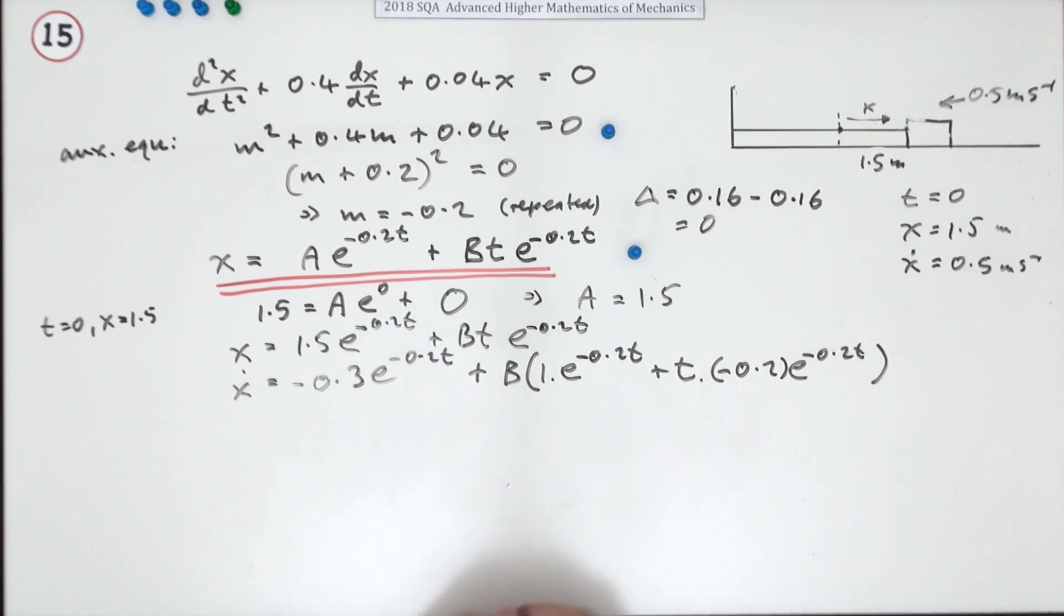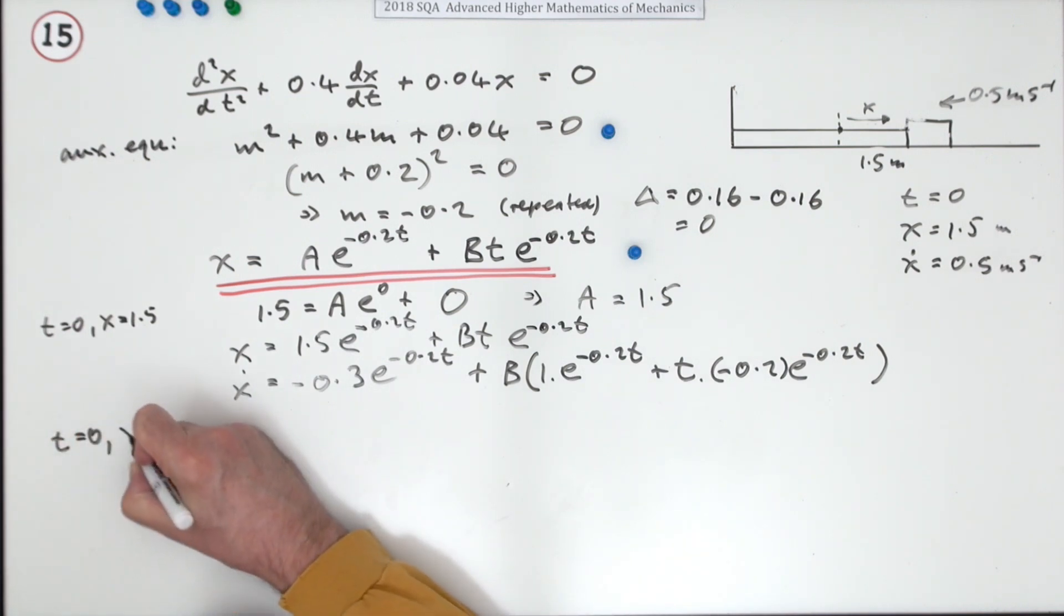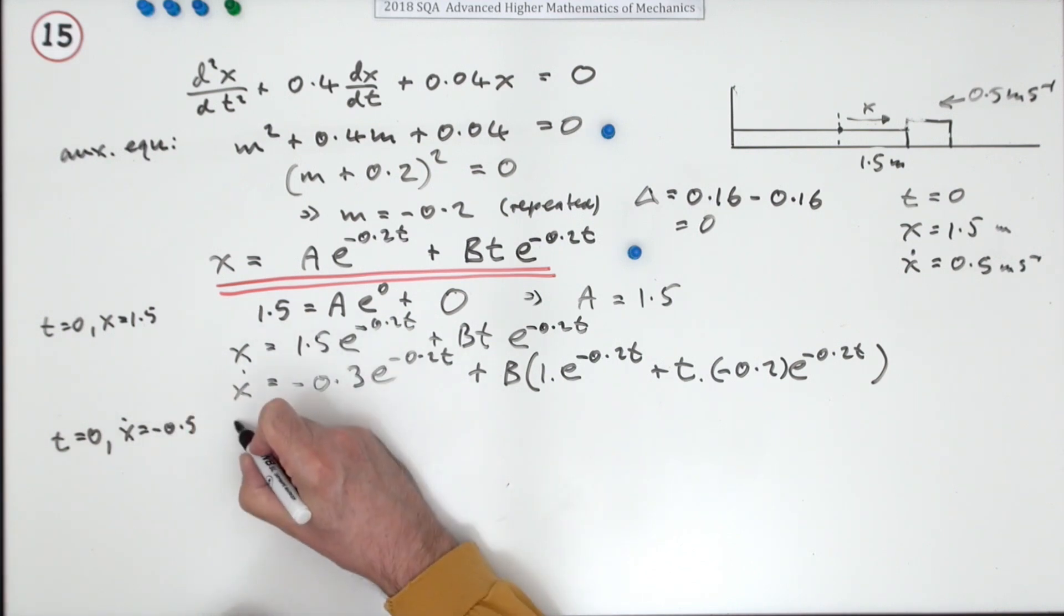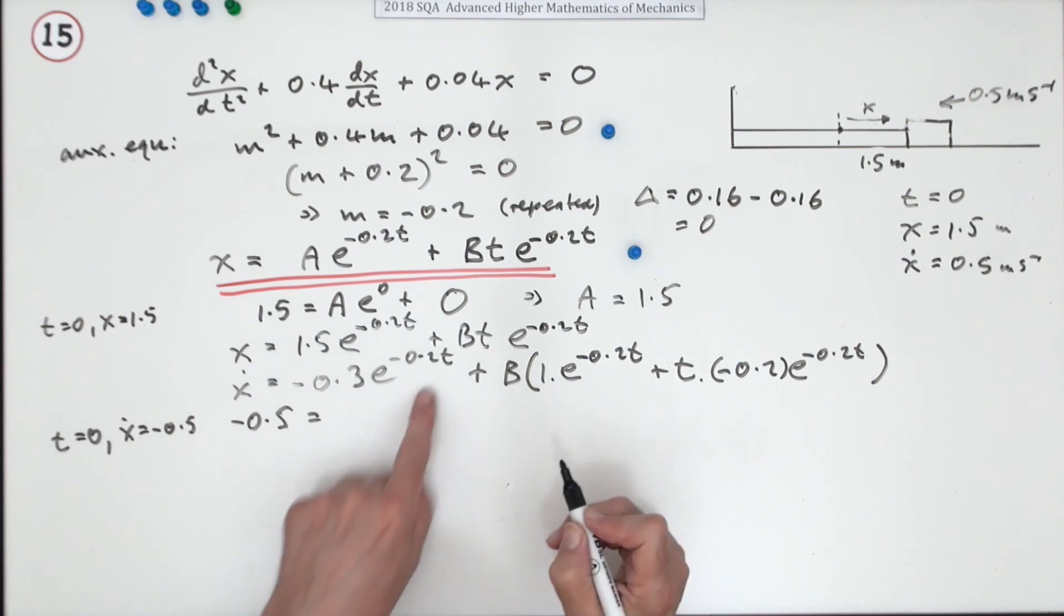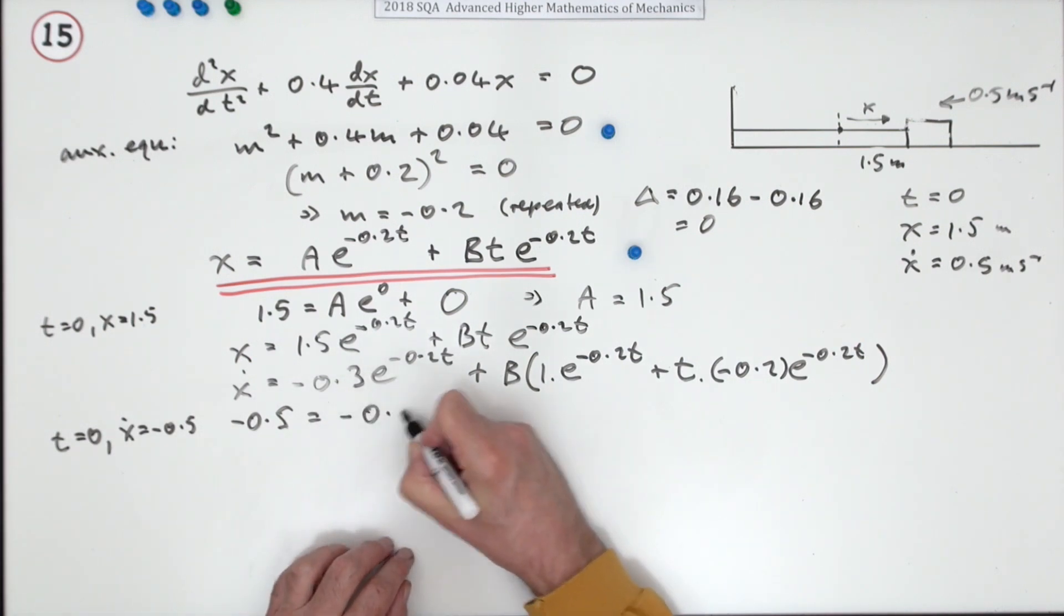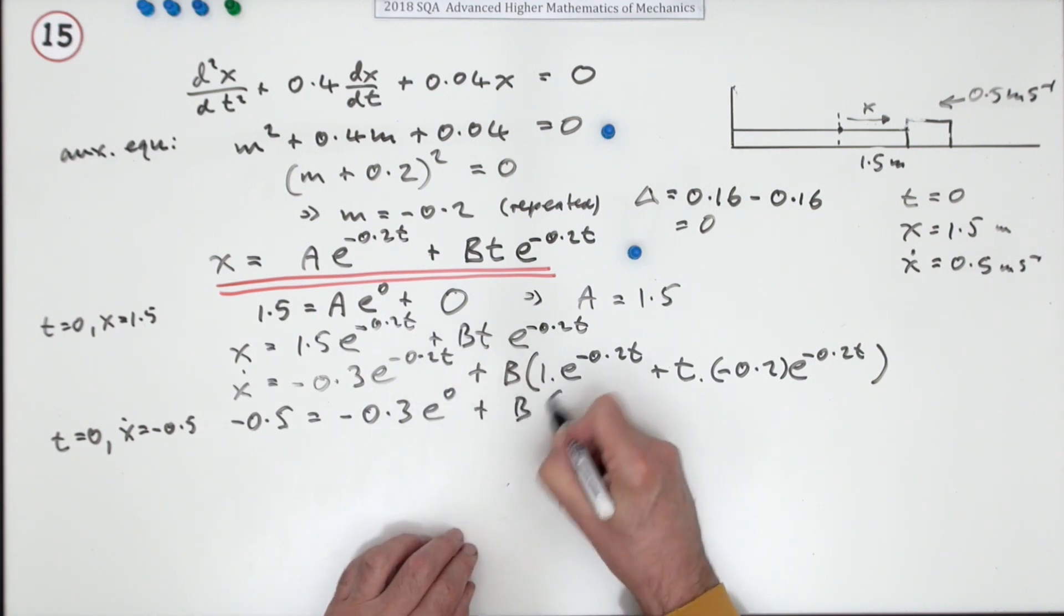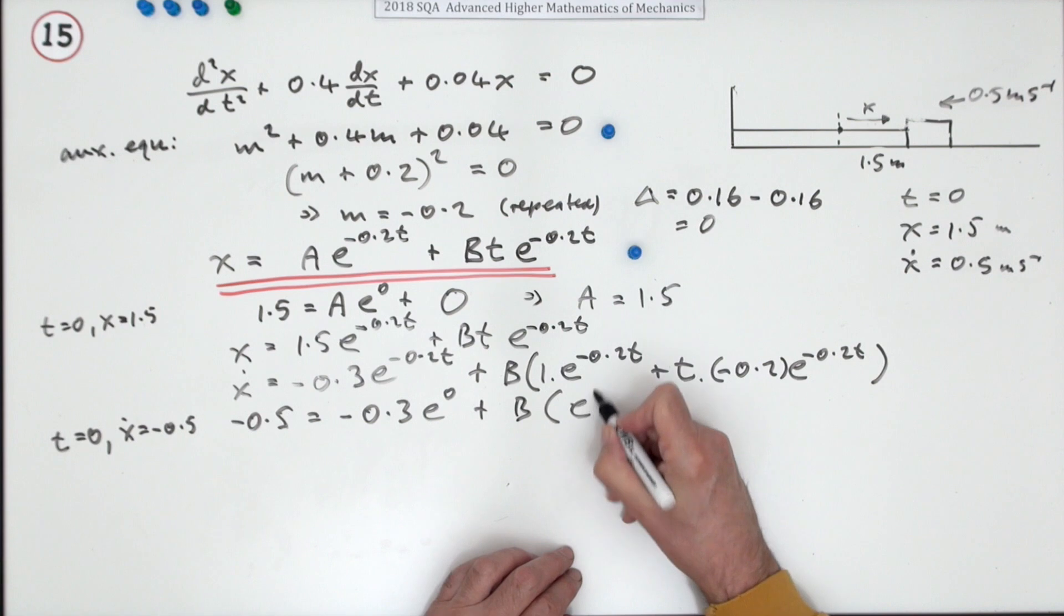Now you don't need to tidy it up because you're just going to put numbers into it. So now using the second initial condition, which is x dot is negative 0.5, I've got this: x dot is negative 0.5.